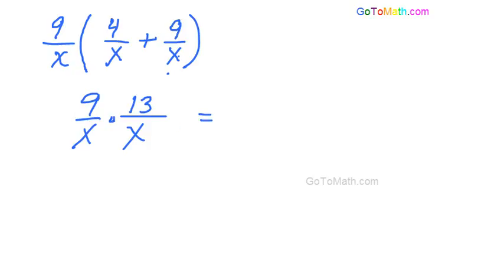And then multiplication, we just multiply the numerators. That's going to be 117, and then x squared.